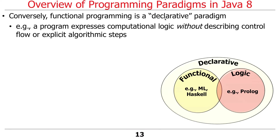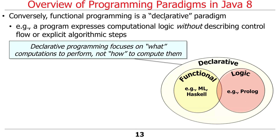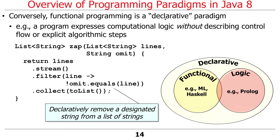In contrast, there's declarative programming. Declarative programming doesn't say how to do it — it says what the computational logic should accomplish. It doesn't describe explicit control flow or explicit algorithmic steps. So it's a somewhat higher level of abstraction. It's about the what, not the how — you're saying what you want done, not how to do it.